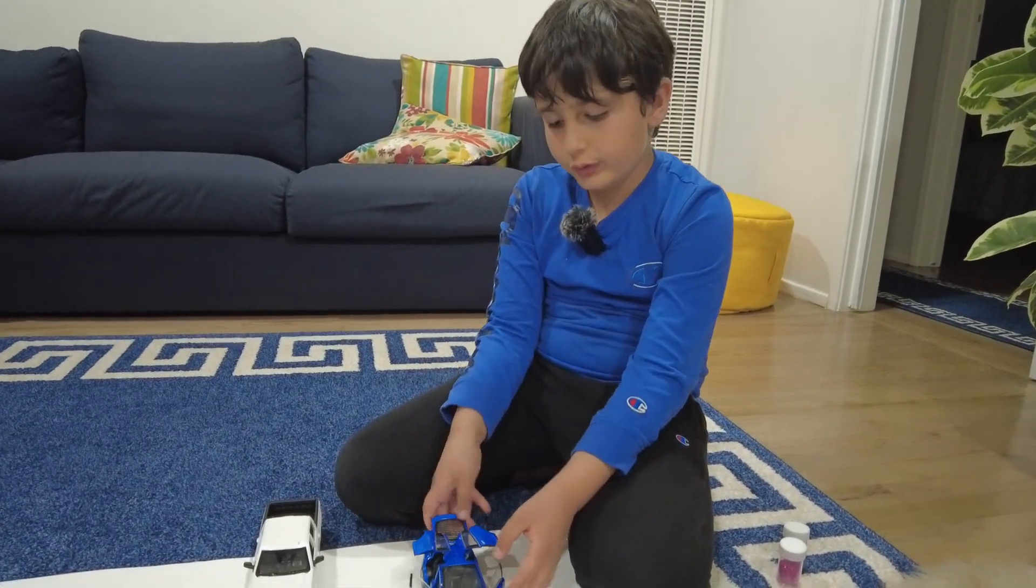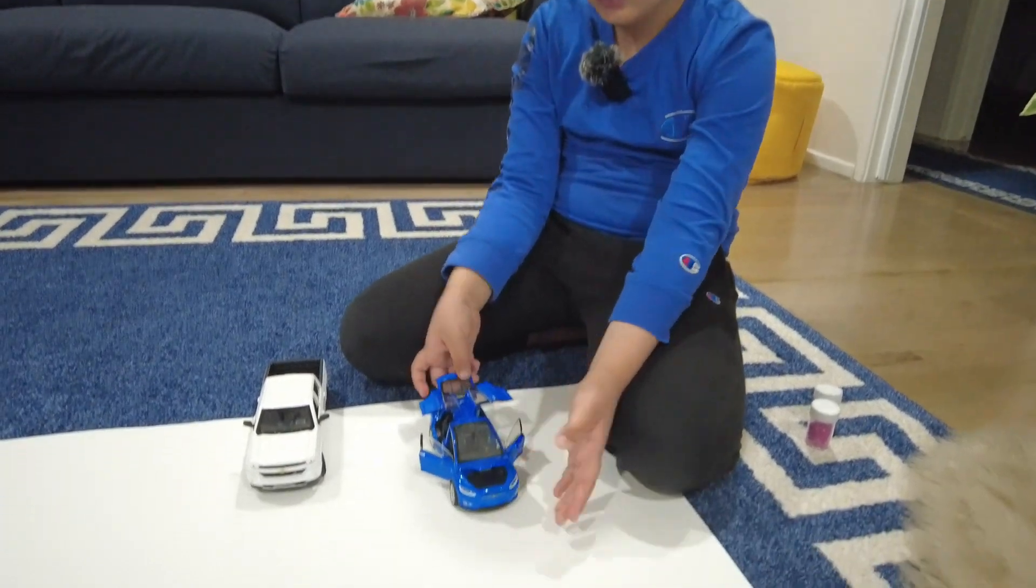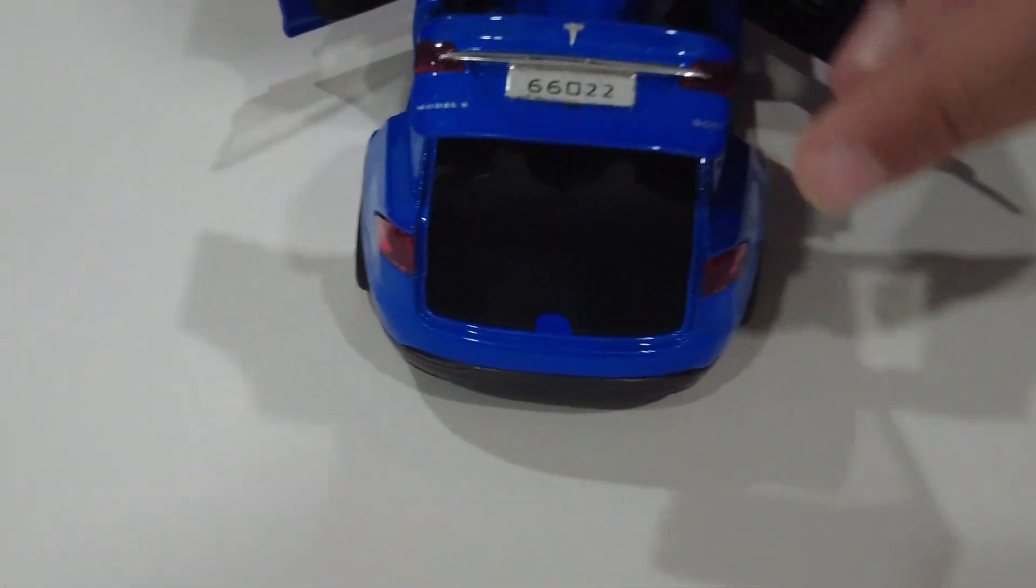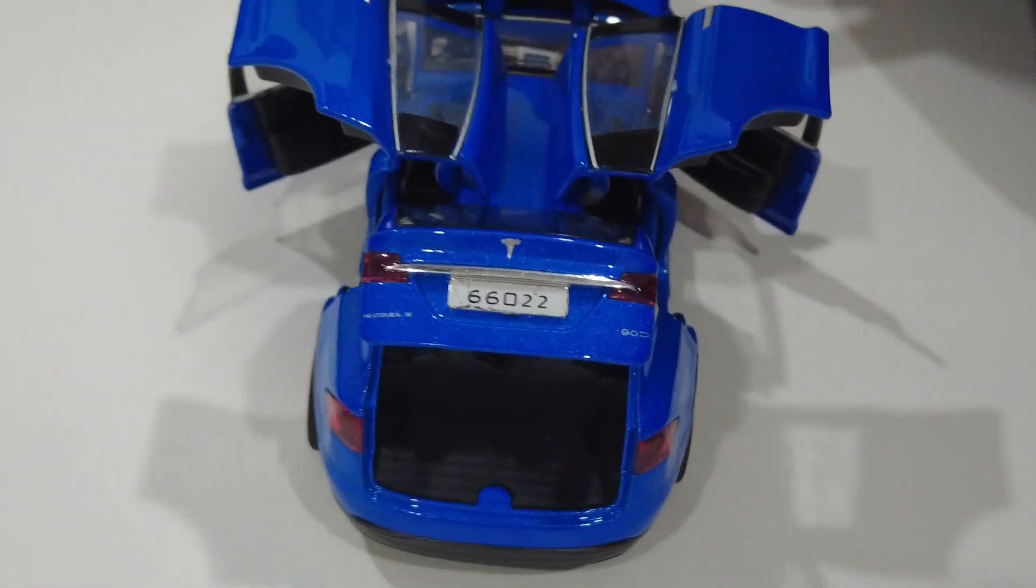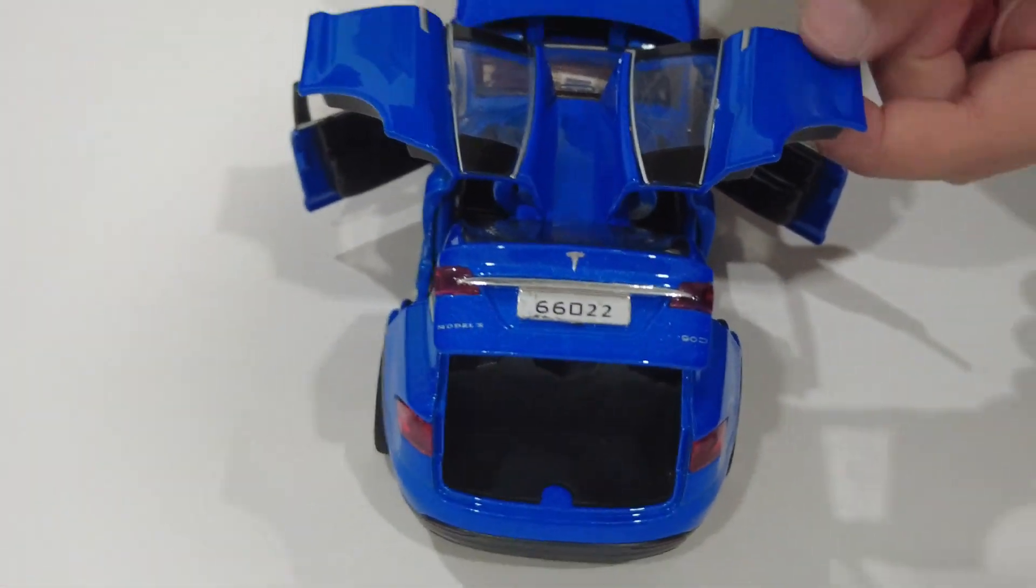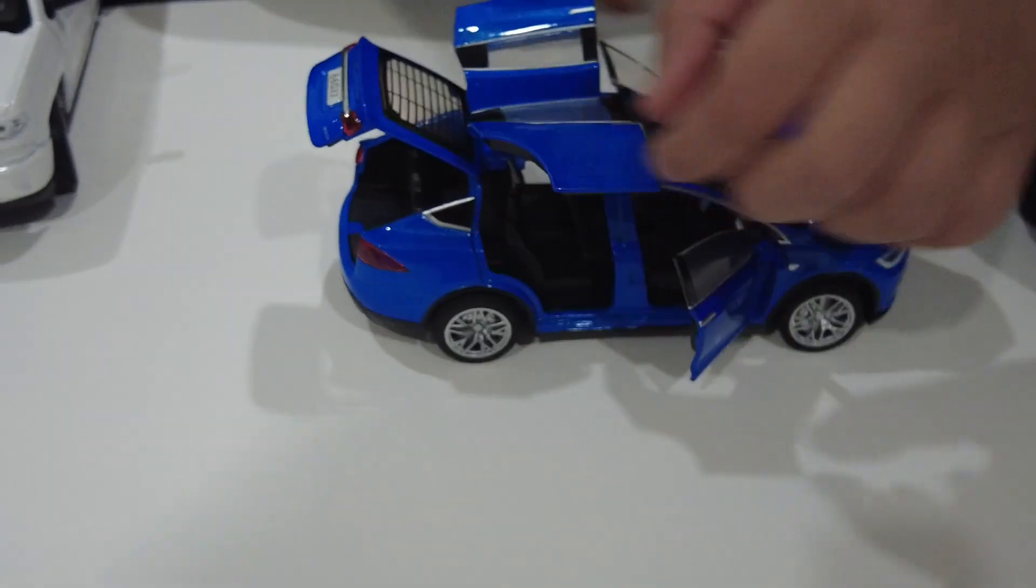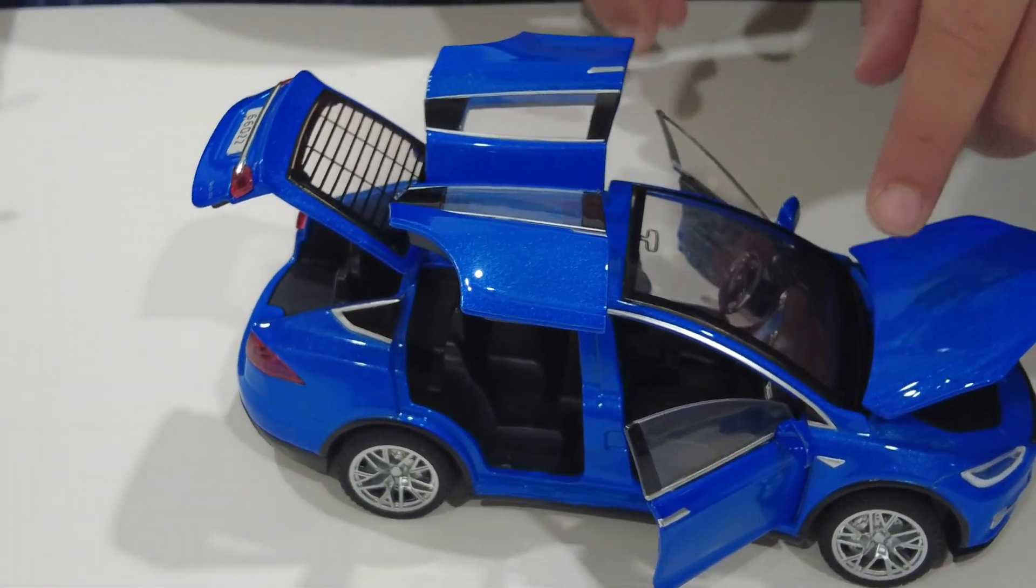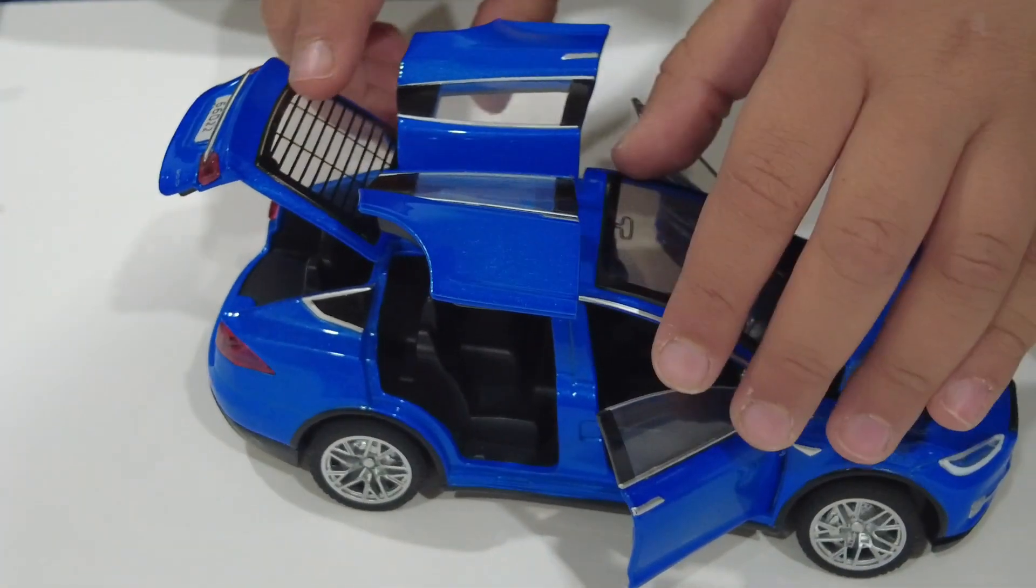Now I'm going to show you what the inside looks like. First we'll start off with the trunk. As you can see, it doesn't have any detail but it's still very nice in there. Next is the back seats. They're also not very detailed but they're also very cool that they have the falcon wing doors.